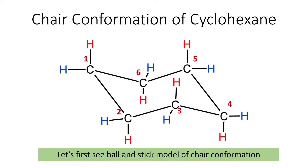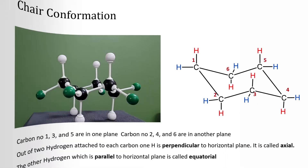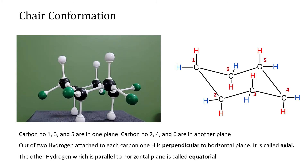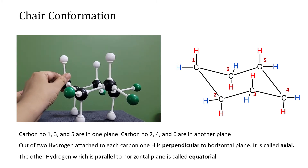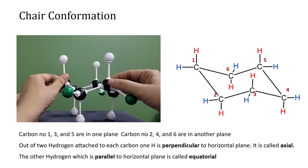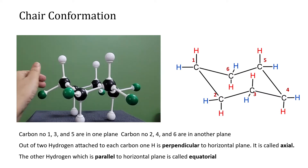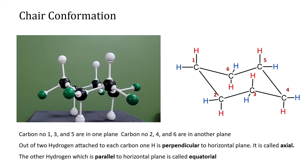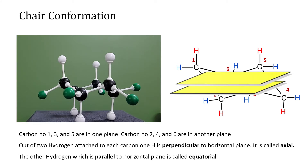Out of these four conformations, in this video we will discuss chair and boat conformations in detail. This is a ball and stick model of cyclohexane. As you can see, the carbons shown by black balls are not all in one plane. If we consider carbon number one, then carbons one, three, and five are in one plane, whereas carbons two, four, and six are in another plane — so we can consider two horizontal planes.